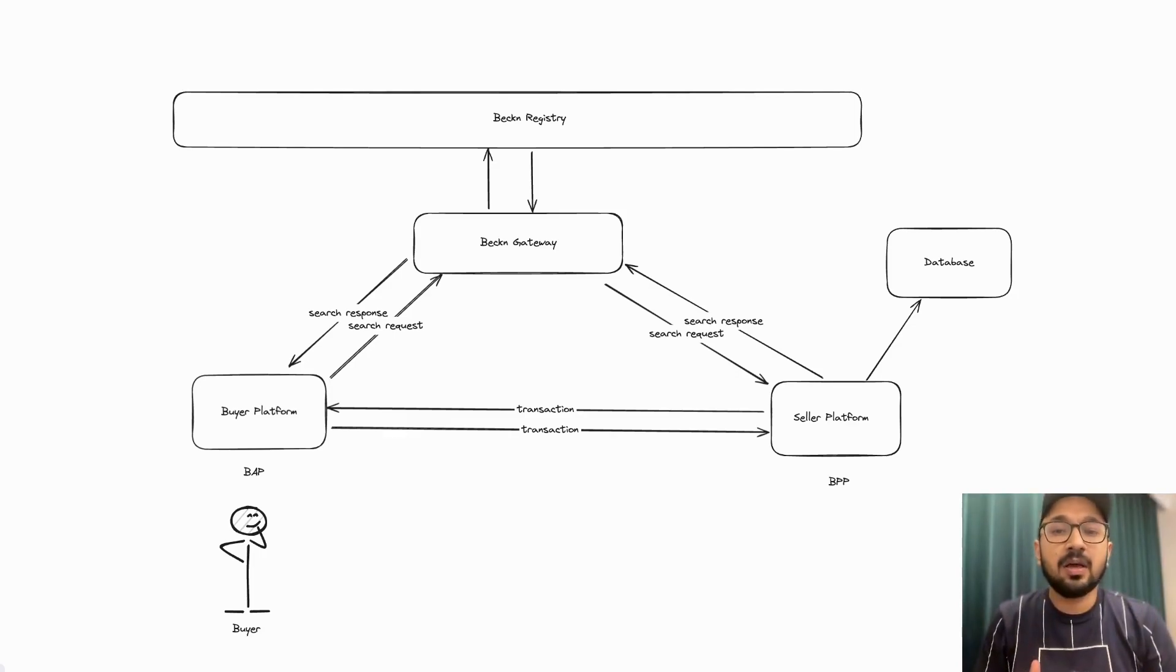What happened? BAP asked if anyone is selling cakes on the network. BPP says, I am. BPP then sends the catalog or whatever BAP has requested for in a certain format, a Beckon decided format so that BAP can understand. In the first search request response, BPP also sends the address to BAP.